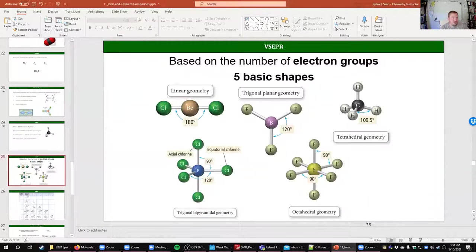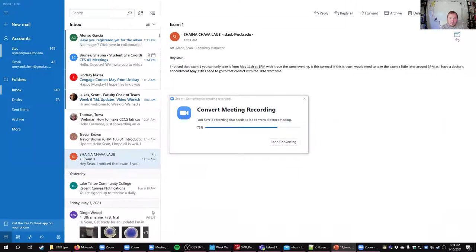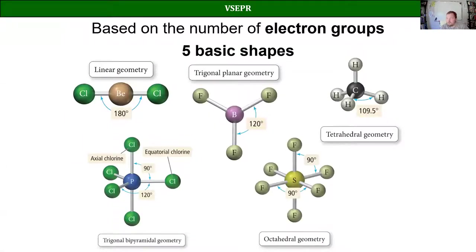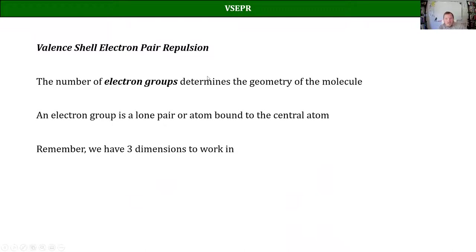The overall concept is called VSEPR, which stands for Valence Shell Electron Pair Repulsion. It's essentially geometry where we're trying to keep electron groups as far away from each other as possible. The number of different things attached to a central atom determines the shape — what we call the geometry — of the molecule.